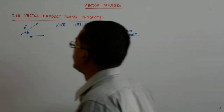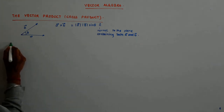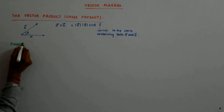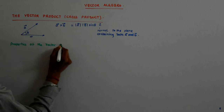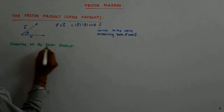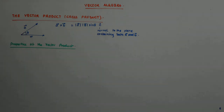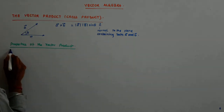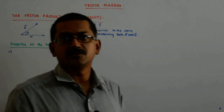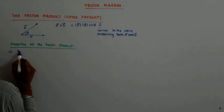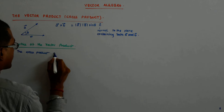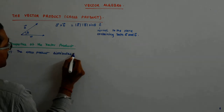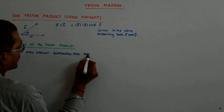Now we come to the properties of the cross product — also called the vector product. The first property is that it is distributive. The cross product distributes over addition.